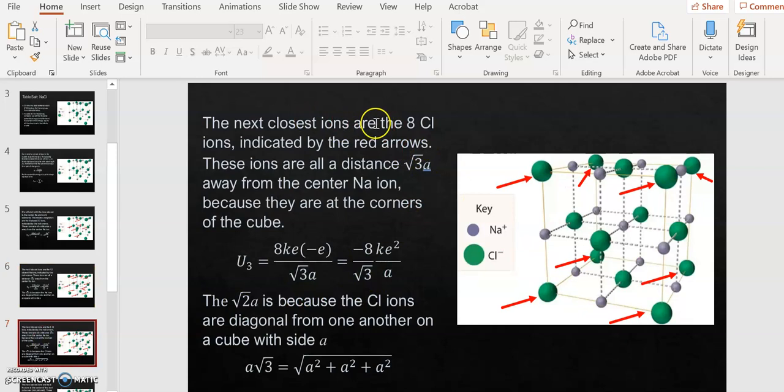The next nearest neighbors are the eight chlorine ions indicated by red arrows that are a distance root 3A away from that center sodium ion. It's root 3 if you think of this sodium ion as being at the origin of a three-dimensional coordinate system. There would be a vector, for example, that points from the sodium ion in the center to this chlorine ion, which is on the top left front of our cube. Let's picture the unit vectors for each of the components. We would have A in the i-hat plus A in the j-hat plus minus A in the k-hat, for example, if you did the x, y, z. Then if you do the square root of the sum of the squares of each one of those components, you'd get the square root of A squared plus A squared plus minus A squared, which is of course A squared again. If you find the magnitude of that vector, which points from the center of our cube to here, then you would get root 3A.